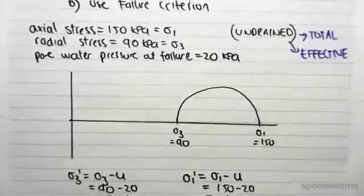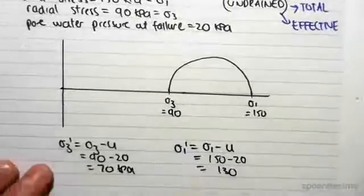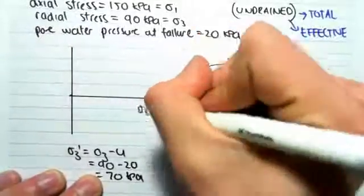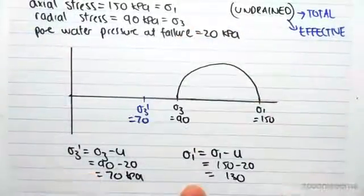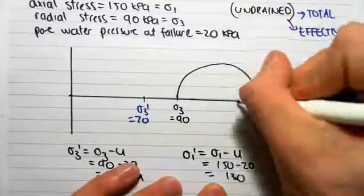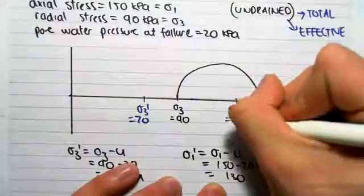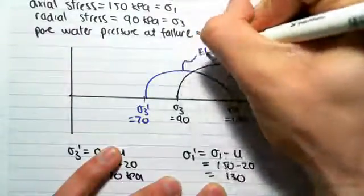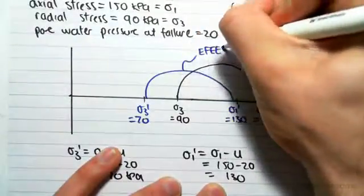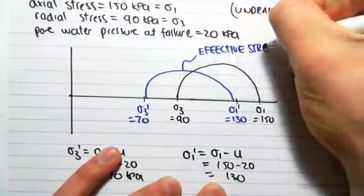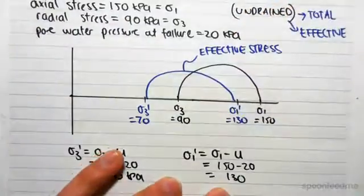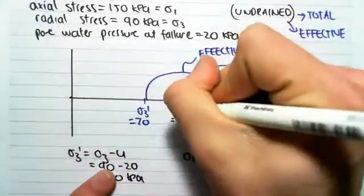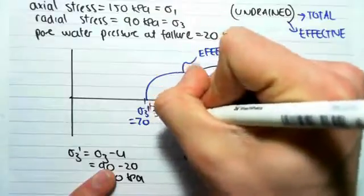Now we can draw our effective stress Mohr's circle. Sigma3 dash is 70, plotted around there, and sigma1 dash is 130, plotted around there. We connect the circle — shown here in blue as our effective stress Mohr's circle. Graphically, all we did was subtract the pore water pressure of 20, shifting the circle from the total stress position to the effective stress position.